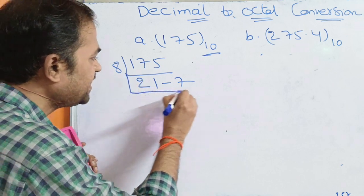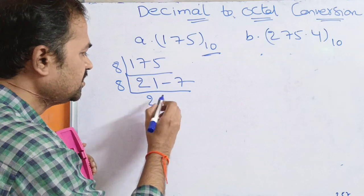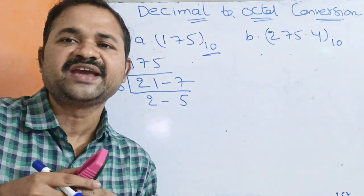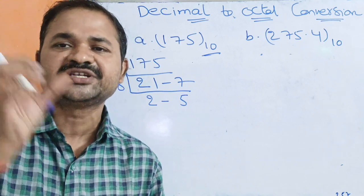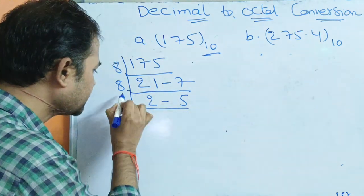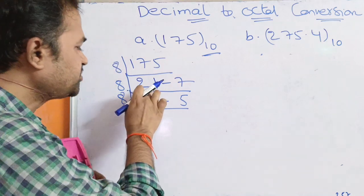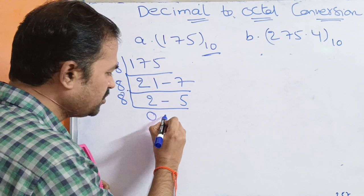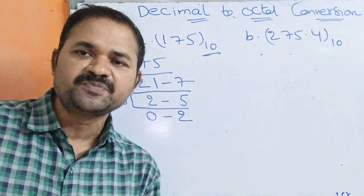Again divide by 8: 8 twos are 16, so 21 minus 16 equals 5, giving quotient 2 and remainder 5. We repeat the process until we get a quotient of 0. Dividing 2 by 8 gives quotient 0 and remainder 2, so we can now stop the process.